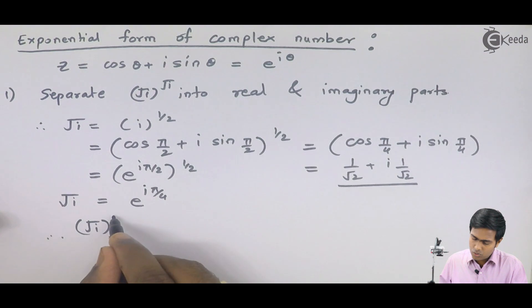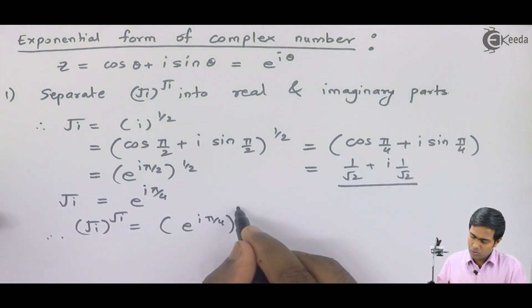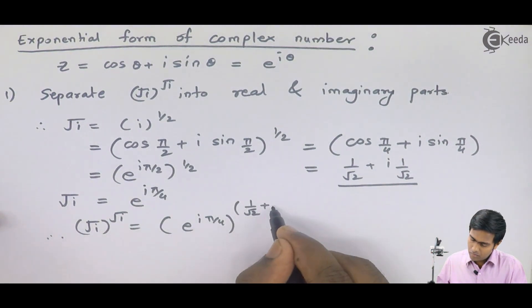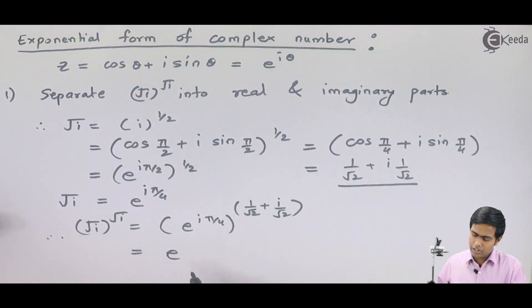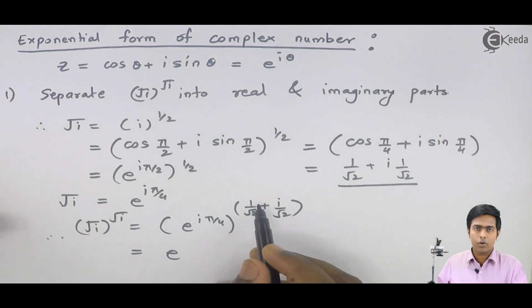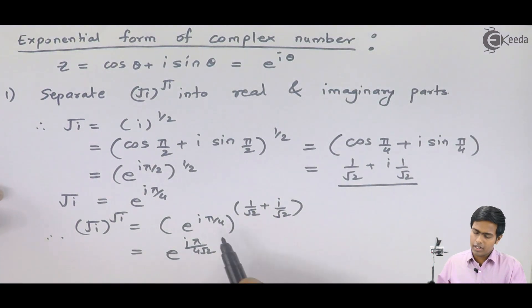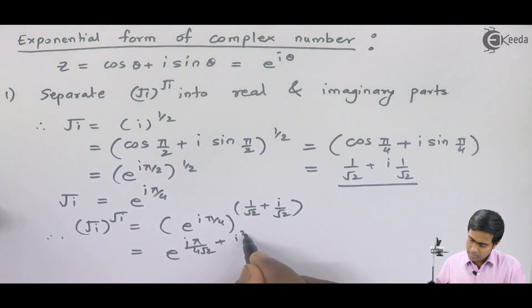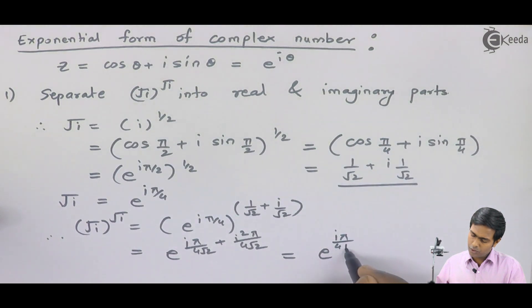Therefore, √i raised to √i becomes e raised to iπ/4, whole raised to (1/√2 + i/√2). We multiply the powers: iπ/4 × 1/√2 gives iπ/(4√2), and iπ/4 × i/√2 gives i²π/(4√2), which equals −π/(4√2). So the expression becomes e raised to [−π/(4√2) + iπ/(4√2)].